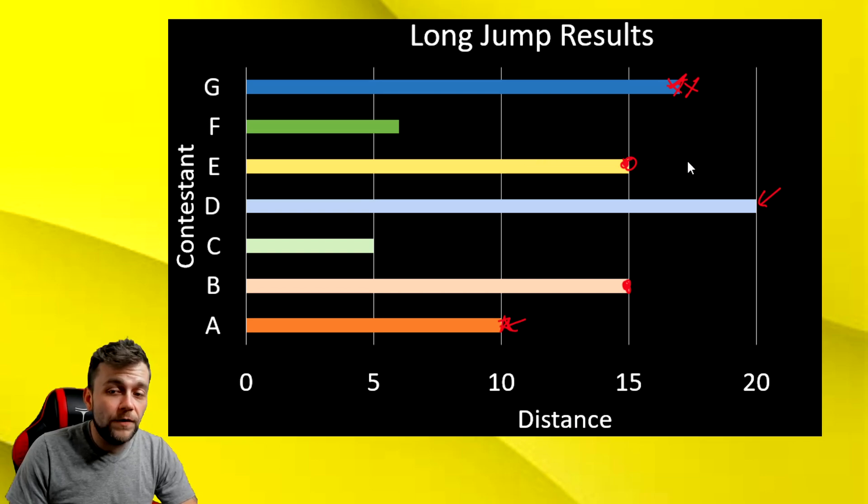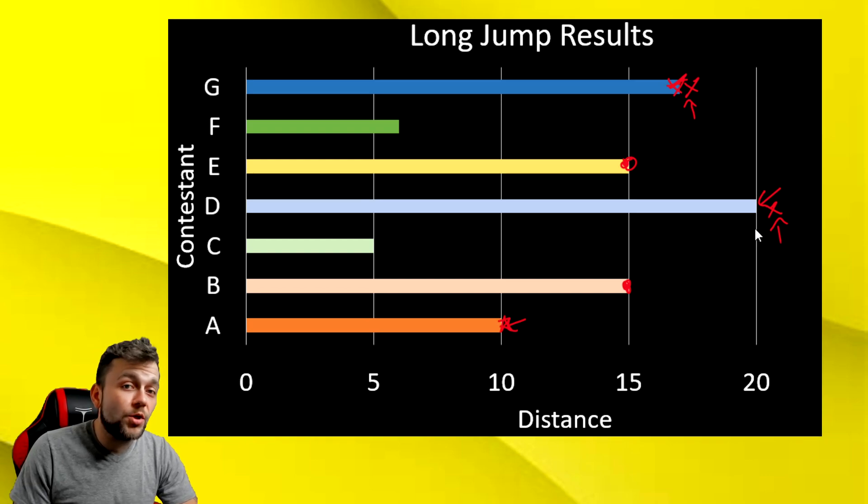Contestant G jumped farther than 15 feet. And contestant D jumped farther than 15 feet. However, I'm not going to put an X on the yellow bar or this tan bar. Because they didn't jump farther than 15 feet. They just landed right on it. So, we put our marks down here and here. That answer for that question is now complete.